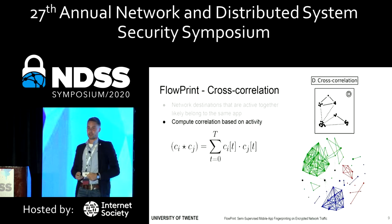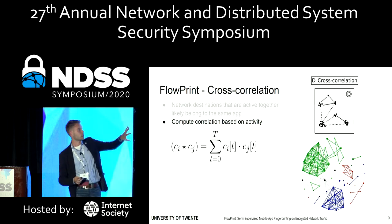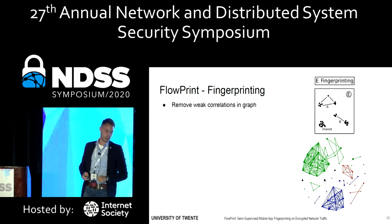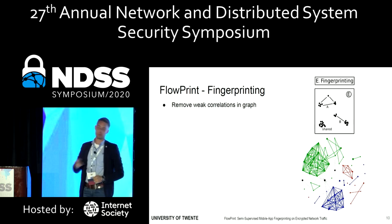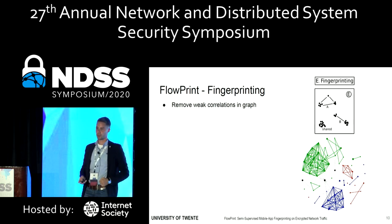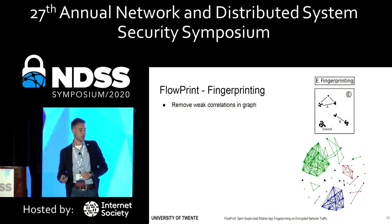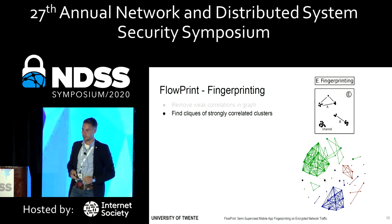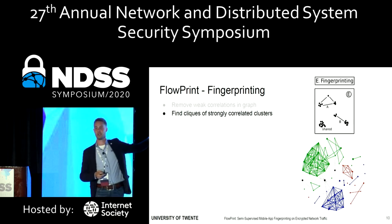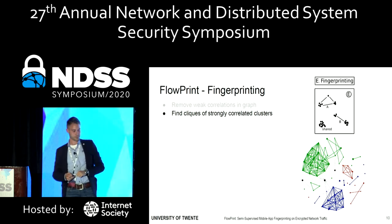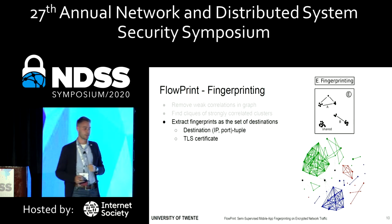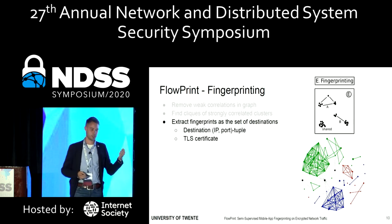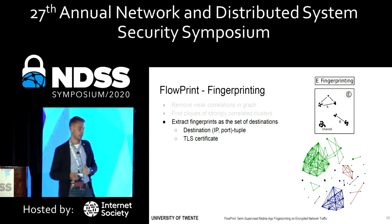Suppose that we have this graph — we now want to extract these clusters as fingerprints. We remove all cross-correlations with a very low score to get rid of weak links. We then try to look for cliques in the graph — cliques are basically fully connected subgraphs — which allows us to distill the fingerprints from the graph. We represent the fingerprints as the set of destinations, which are the IP and port tuples and the TLS certificates.